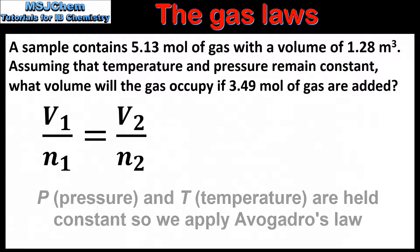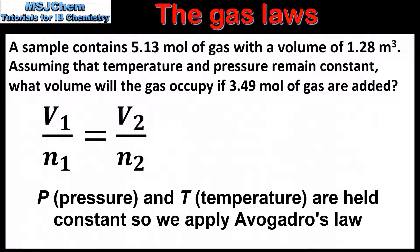In the next example a sample contains 5.13 moles of gas with a volume of 1.28 cubic metres. Assuming that temperature and pressure remain constant, what volume will the gas occupy if 3.49 moles of gas are added? Here we have the equation for Avogadro's law. In the question we're given V1 and N1. To find N2 we need to add the two amounts in moles, which is 5.13 plus 3.49.